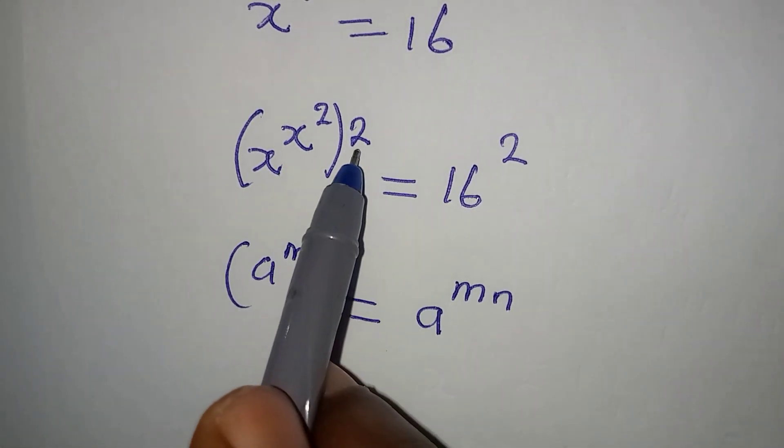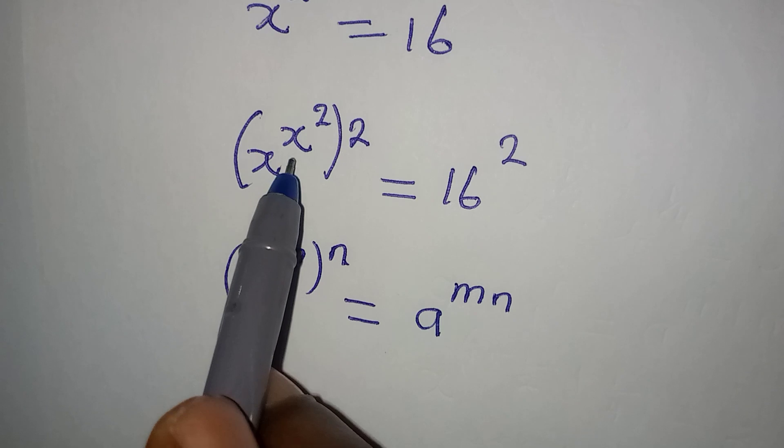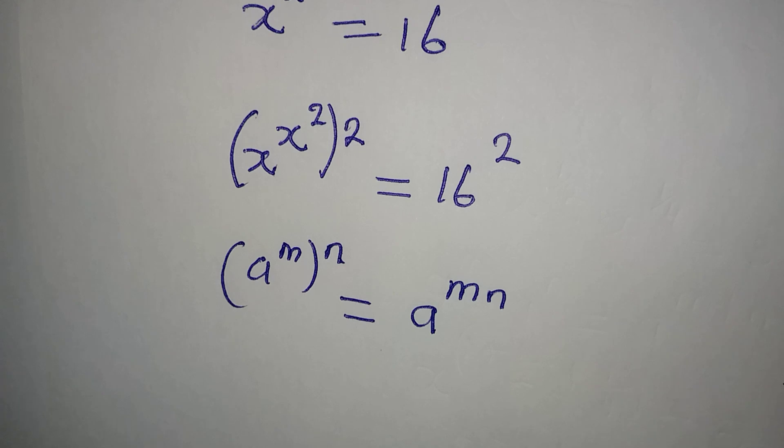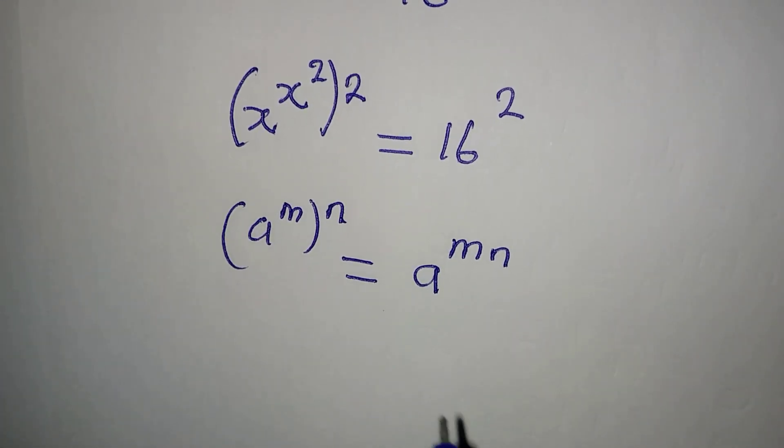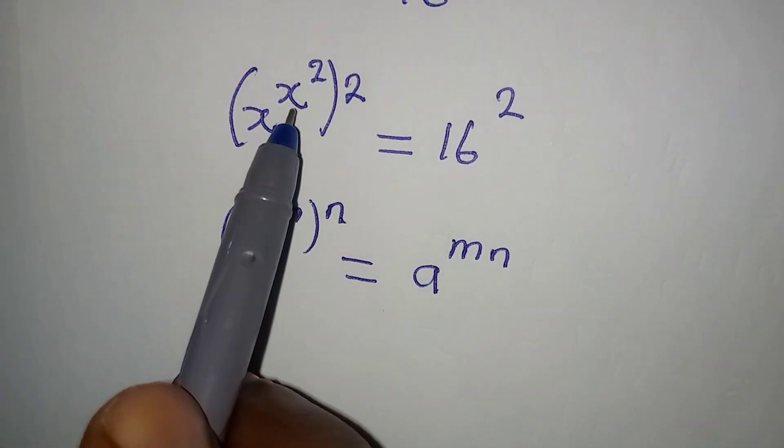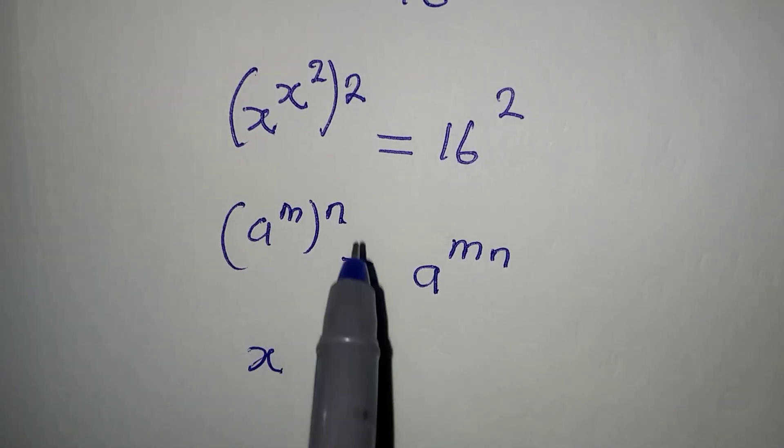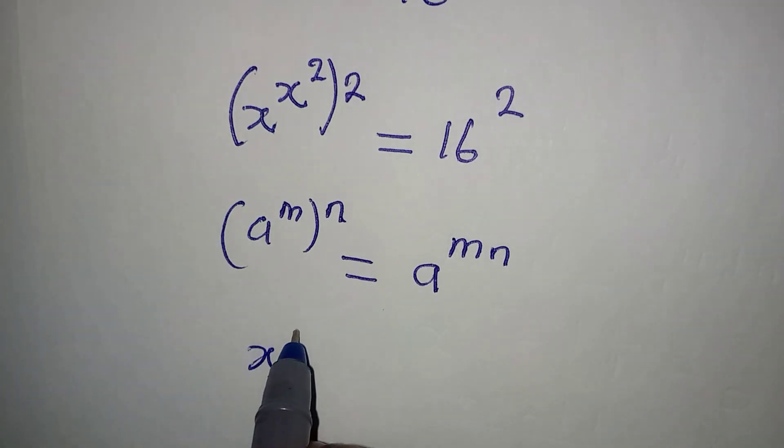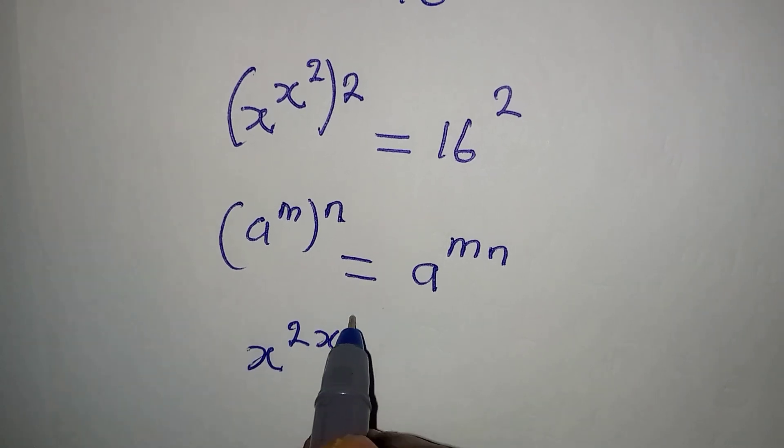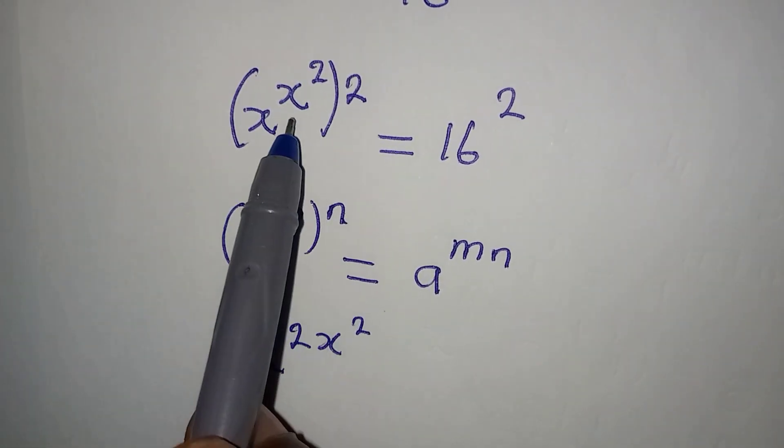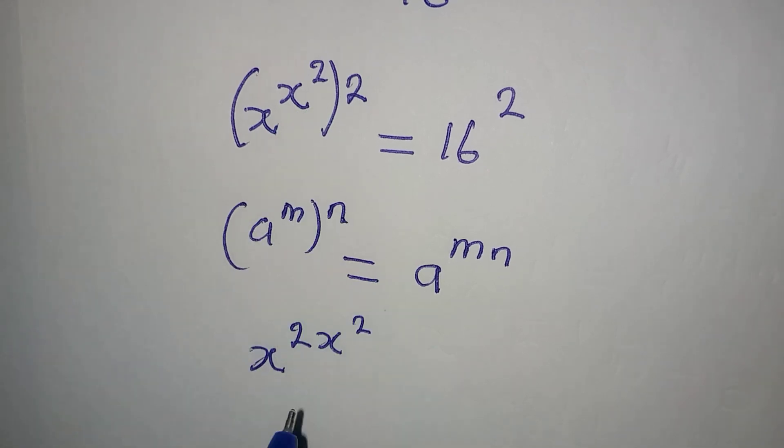Looking at this, these two here is a power and x squared here is also a power. So from here we can now multiply the powers, so we get x to the power of 2x squared because this power 2 will multiply x squared.